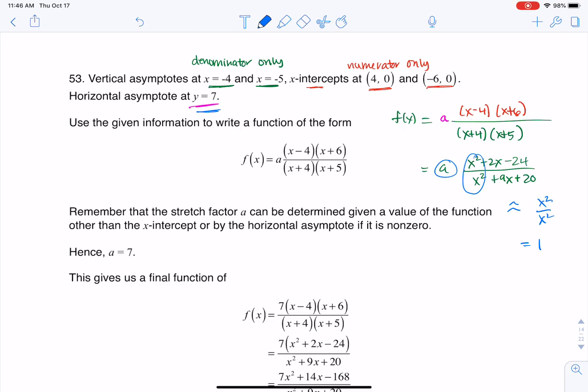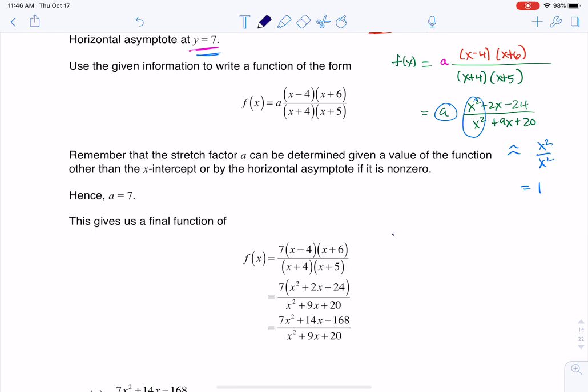So as I finish this problem off, I know f of x - I have my stretch factor of 7, I've got x minus 4 times x plus 6 on the numerator, and I've got x plus 4 times x plus 5 on the denominator, and that meets all of those traits.